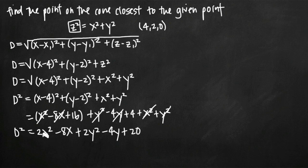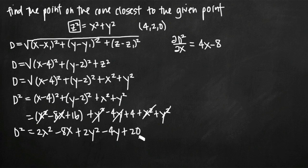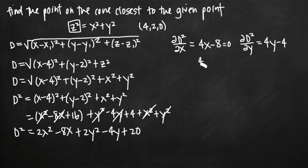To optimize, we take partial derivatives. The partial derivative of d² with respect to x gives 4x − 8 (all other terms drop away). The partial derivative with respect to y gives 4y − 4. We set both equal to zero to find critical points: 4x − 8 = 0 gives x = 2, and 4y − 4 = 0 gives y = 1.